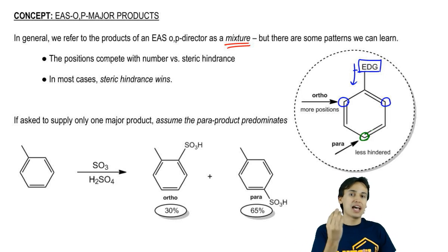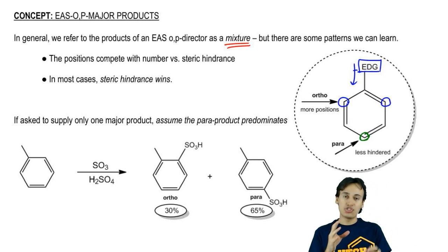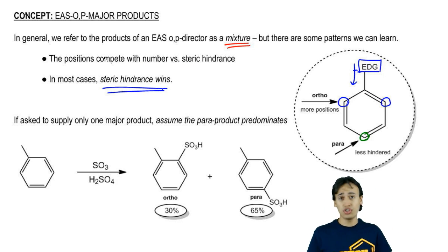It's actually easier to add to that para position even though there's less of them. In general, when you pair these two together, when you compete them against each other in number versus steric hindrance, steric hindrance is usually going to win. Usually, there's going to be a slight advantage for the para position over the ortho positions.